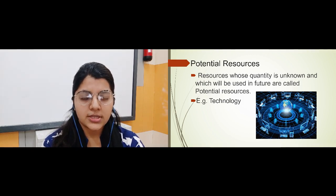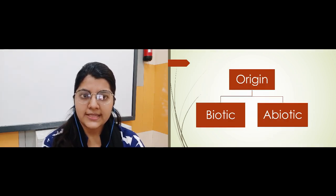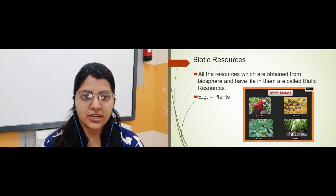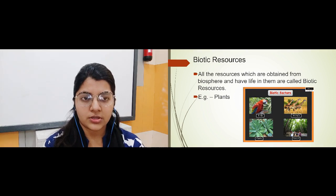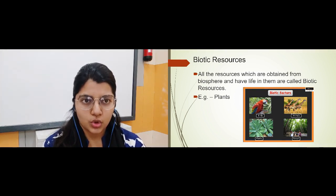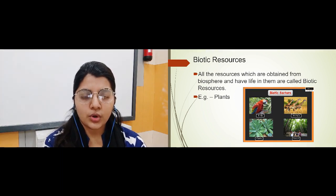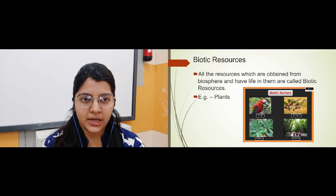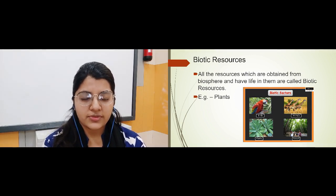On the basis of origin — that is, from where they come — we have two parts: biotic resources and abiotic resources. Biotic resources are all those resources which come from the biosphere. The biosphere is the combination of the plant and animal kingdoms. So all those resources which come from the biosphere and have lives in them — living organisms — are called biotic resources. For example, plants, animals, birds, and insects are all biotic resources because they come from the biosphere and have lives in them.